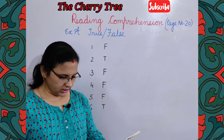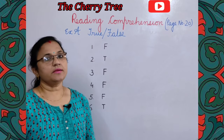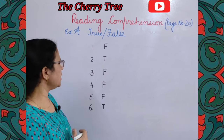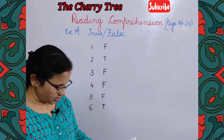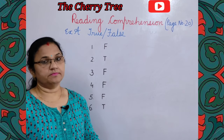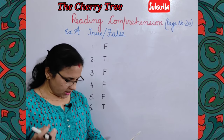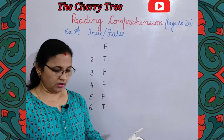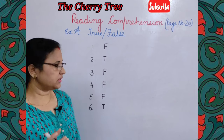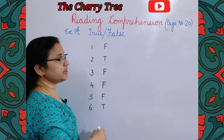Next: After the goat ate the leaves, Rakesh's grandfather said that the tree would die. This is also false. Next: When Rakesh was nine and the tree was four, it was taller than him. This is also false — both of them were of same height. Next: Rakesh's grandfather would sit under the cherry tree on a cane chair. This is also true. So students mark false, true, false, false, false and true.